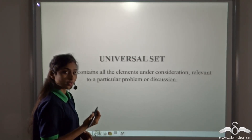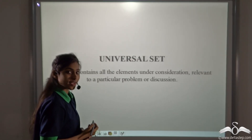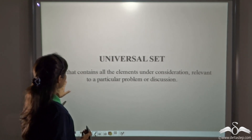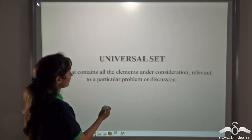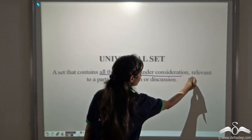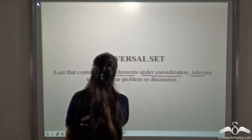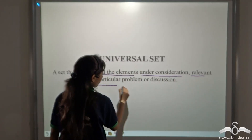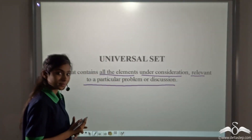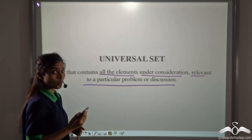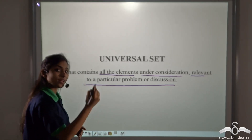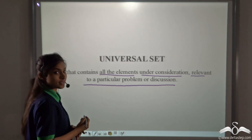What is a universal set? A universal set is a set that contains all the elements under consideration relevant to a particular problem or discussion. That is a parent set. Now we learn how to write sets inside universal sets.